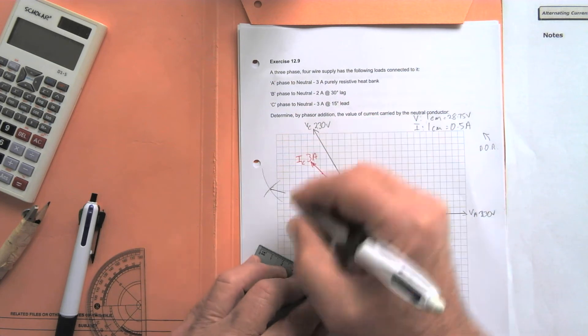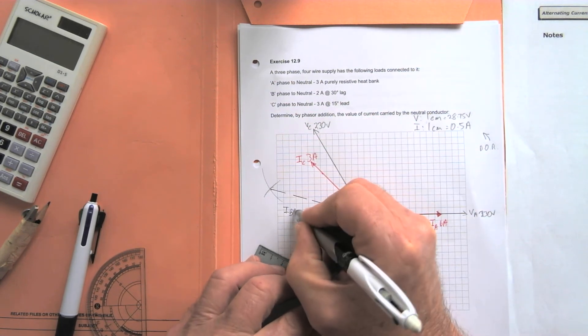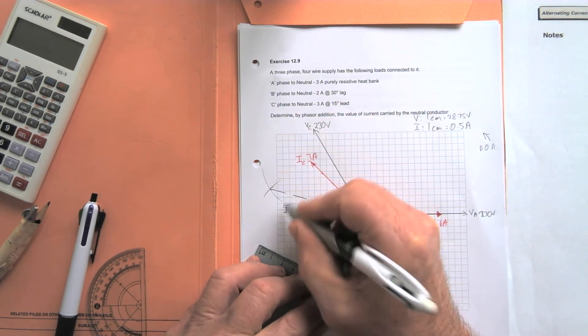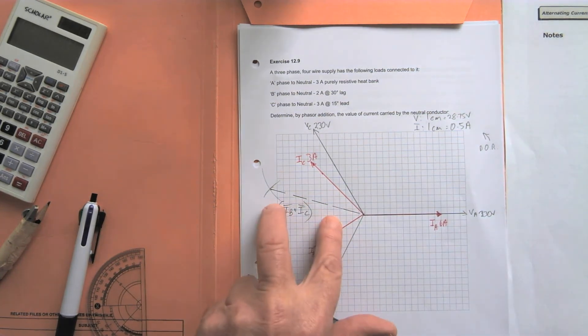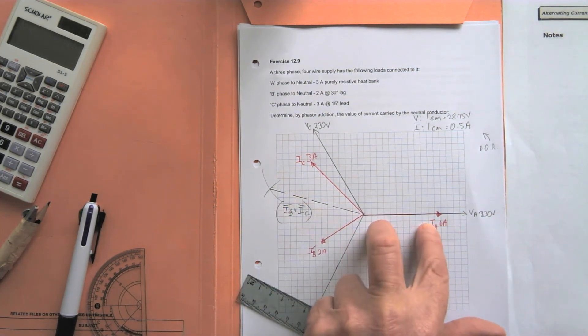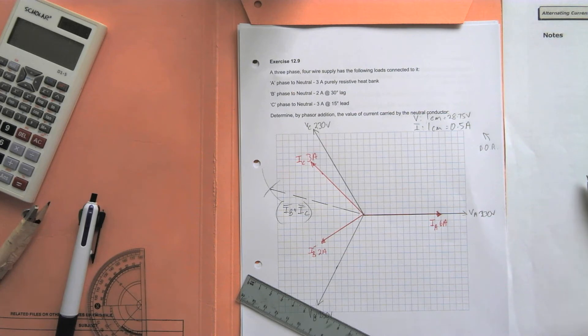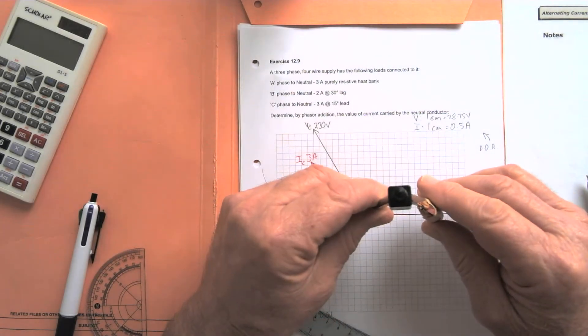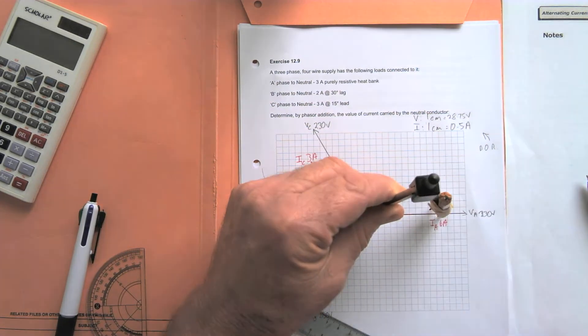Okay, so that's IB plus IC by phasor addition. We've got to add that value again to the IA value to complete the phasor addition. So we'll take the length of IA and come to the tip of IB plus IC, scribe an arc.